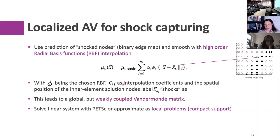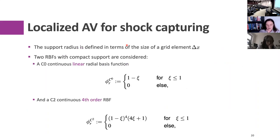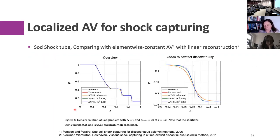We use the prediction from the machine learning and distribute the artificial viscosity with a radial basis function interpolation. This takes the shock location information and smooths it out, giving a C0-continuous or even higher-order derivative-continuous field that is very localized right where our indicator detected the shock. We tried two different RBFs: one that is C0 continuous and one that is C2 continuous.